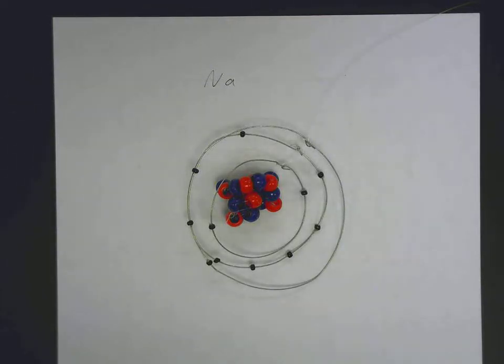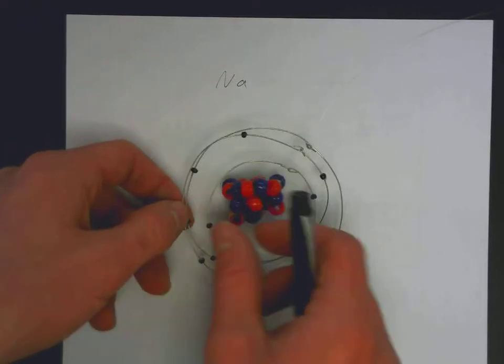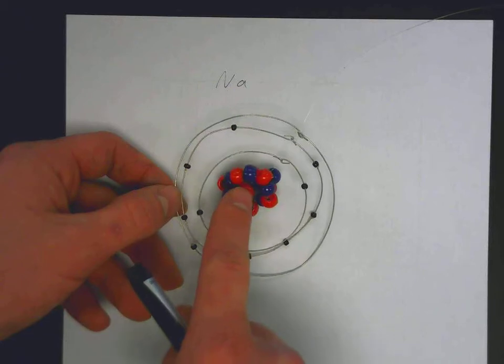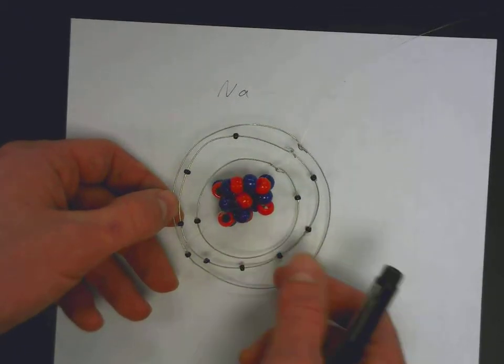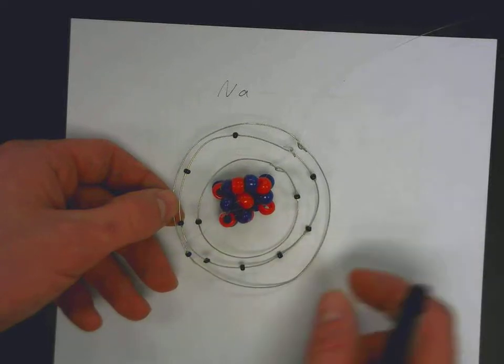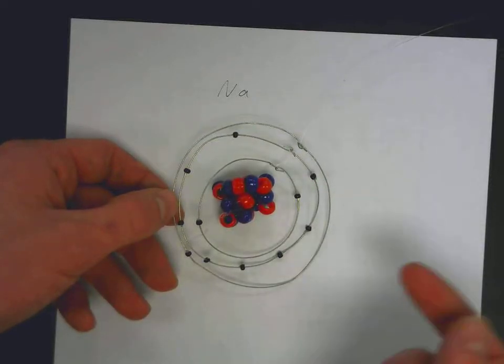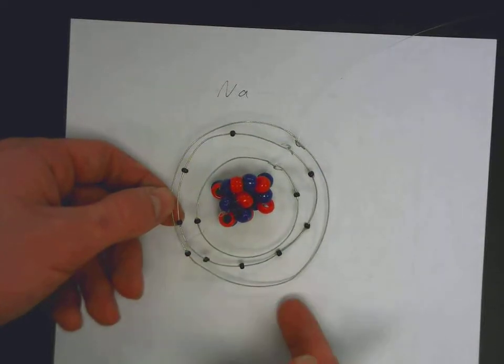This is a tutorial on how to complete the model for the element project. We'll make a Bohr model like this with the nucleus shown with different colored beads for the protons and neutrons. The electrons are shown in energy levels with the black beads. The principal energy levels are the rings, so we combined the different sublevels onto the principal energy levels.